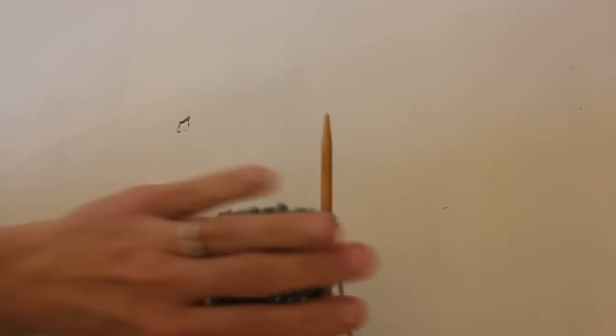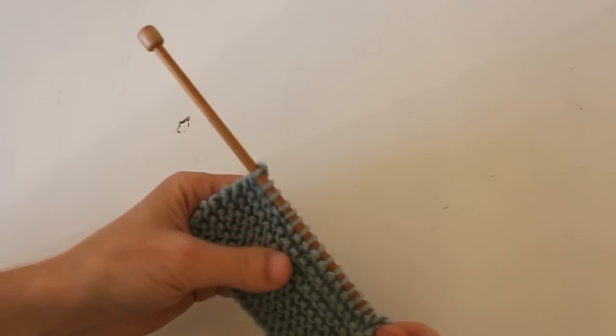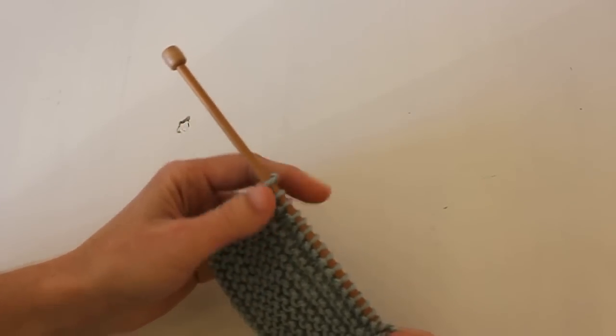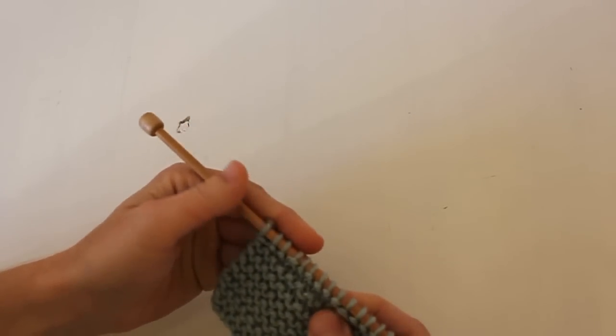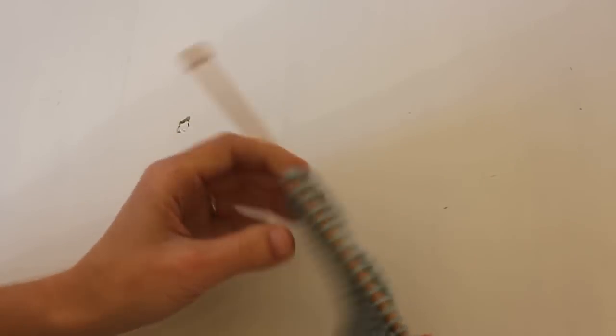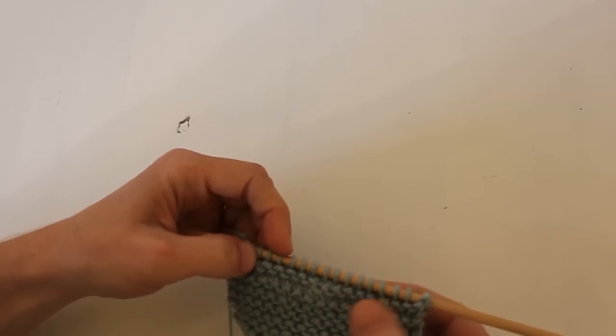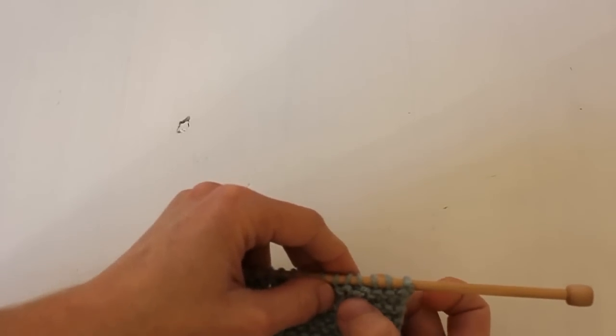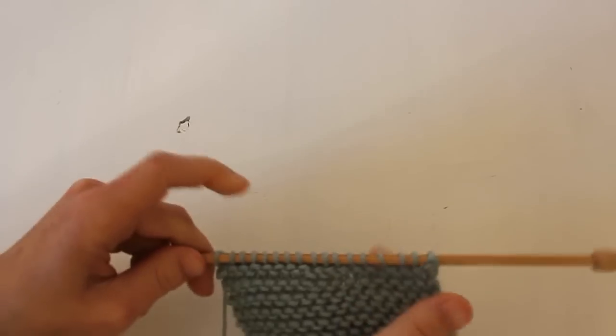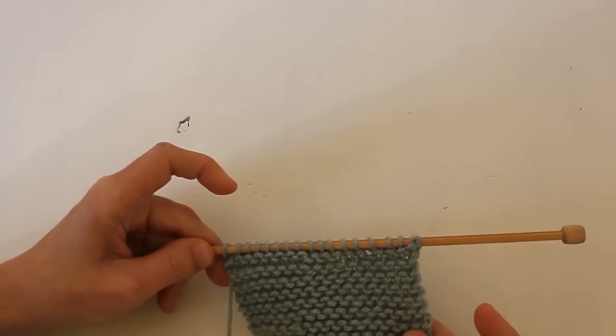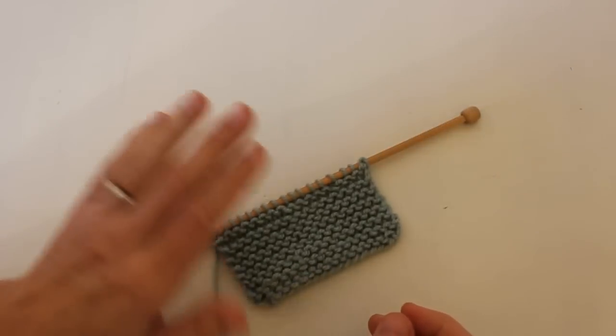Now, where is our little knot? And I'm not even sure. Oh, there it is. It's right there. But as you can see, overall, it's pretty invisible. And that is the magic knot.